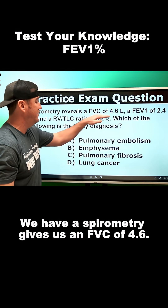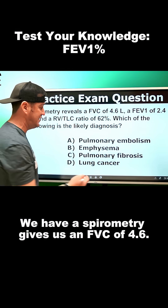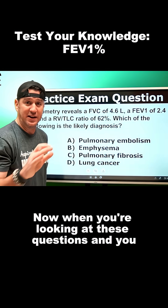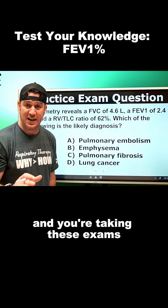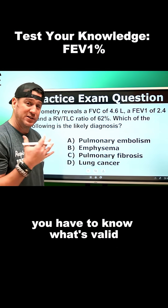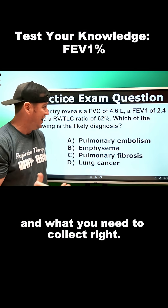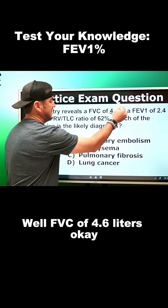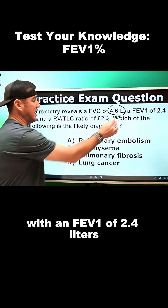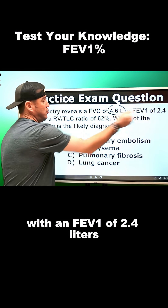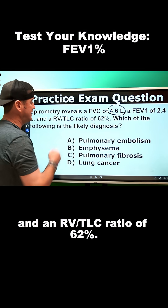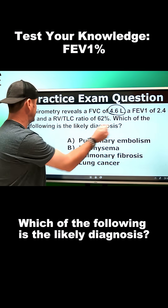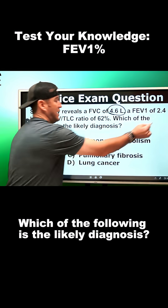We have a spirometry that gives us an FVC of 4.6 liters. When you're looking at these questions and you're taking these exams, you have to know what's valid and what you need to collect. FVC of 4.6 liters with an FEV1 of 2.4 liters and an RV to TLC ratio of 62% — which of the following is the likely diagnosis?